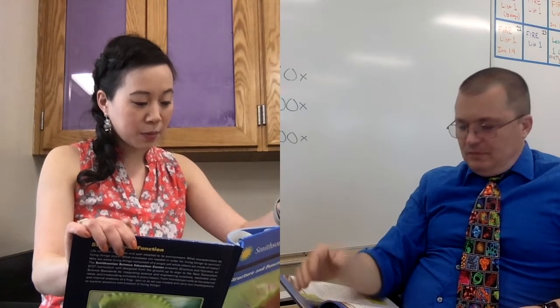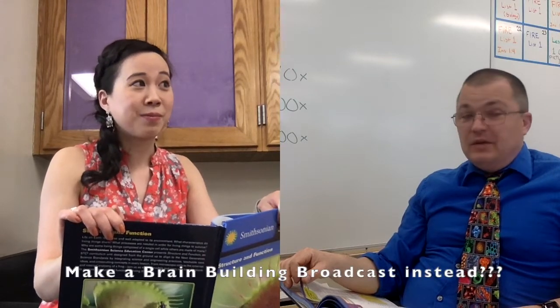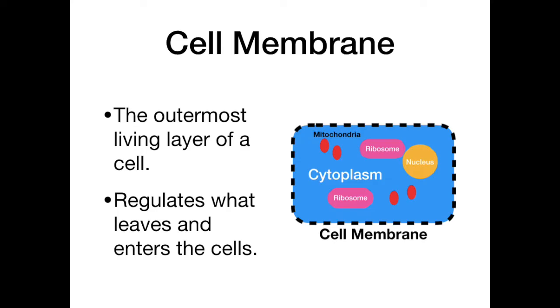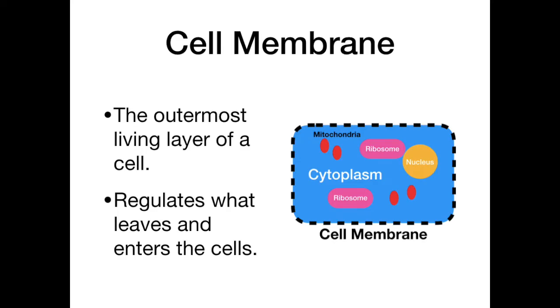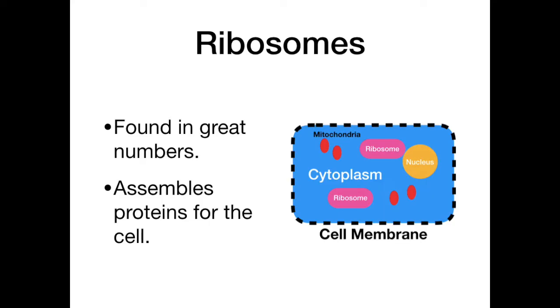Instead of doing this entire project, we could just make it into a Brain Building Broadcast — that way students can answer some questions about it and then move on to look at something interesting in the microscope. There are many different parts to the cell: the cytoplasm is the jelly-like material inside the cell surrounded by the cell membrane. The cell membrane is the outermost living layer, regulating what leaves and enters. The nucleus houses the DNA and contains the nucleolus which produces ribosomes. Mitochondria are membrane-bound organelles that provide energy for cellular functions. Ribosomes assemble proteins based on DNA's instructions.